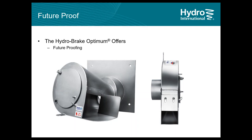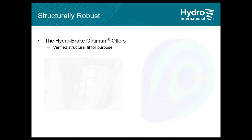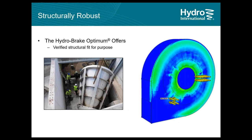We design the HydroBrake Optimum to be structurally robust. Before any unit is fabricated, we perform a finite element analysis to ensure we use the right thickness of steel and add reinforcing bracing to provide the strength needed to cope with high hydraulic heads. This protects the device against any structural deformation.